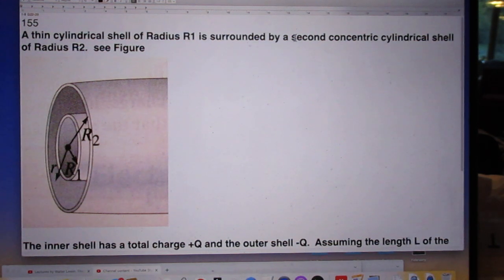Problem 155, definitely a high school problem. A thin cylindrical shell of radius R1 is surrounded by a second concentric cylindrical shell of radius R2.